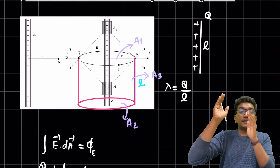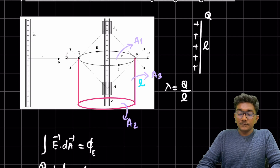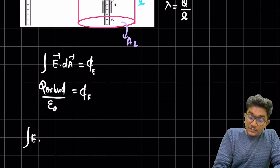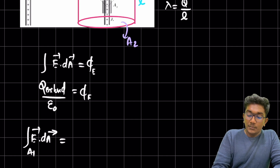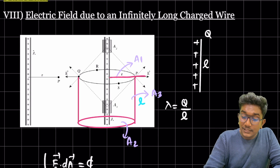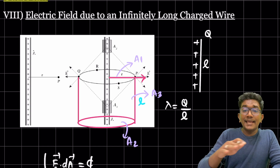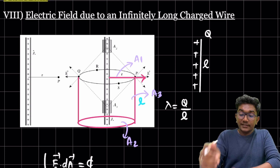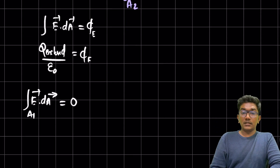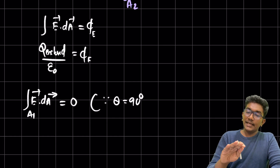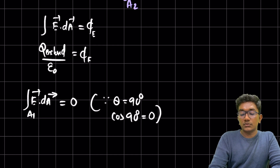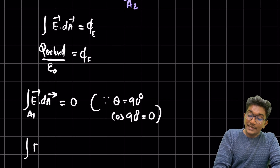Let's find E dot dA for surface A1 (the top face). The electric field points radially outward (perpendicular to the wire), but the area vector of the top face is perpendicular to it — so the angle between E and dA is 90 degrees. Since cos 90° = 0, the integral of E dot dA for A1 equals zero.